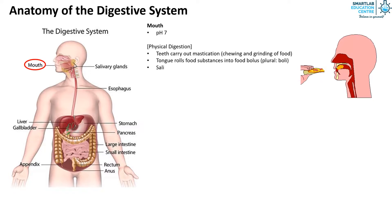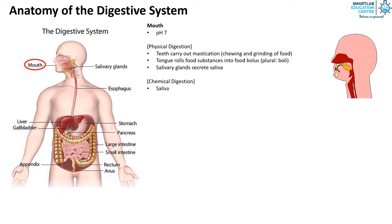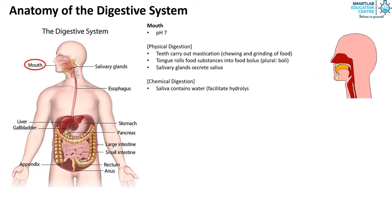The salivary glands secrete saliva. The chemical digestion that occurs is that saliva contains water, which facilitates hydrolysis of starch, mucus, and the enzyme amylase.